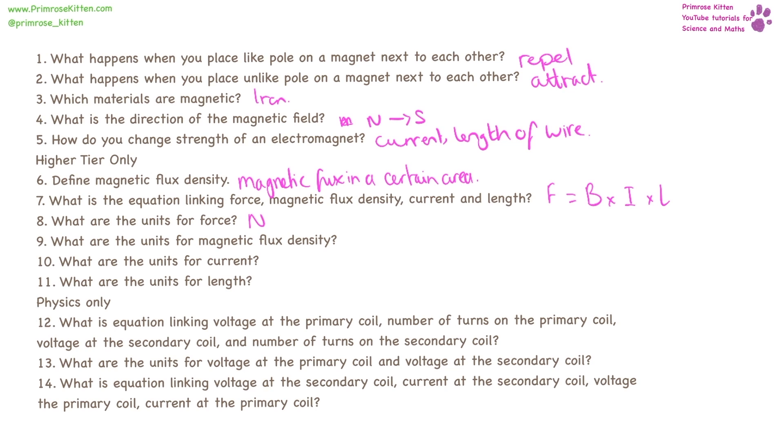The units of force are newtons. The units for magnetic flux density are teslas. The units for current are amps. And the units for length are meters.